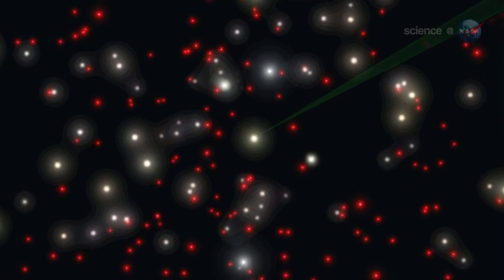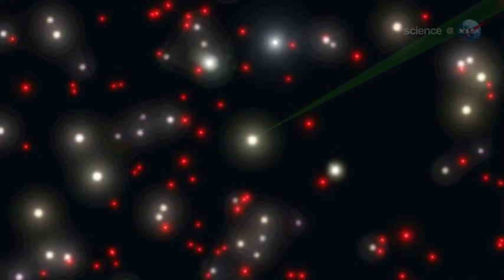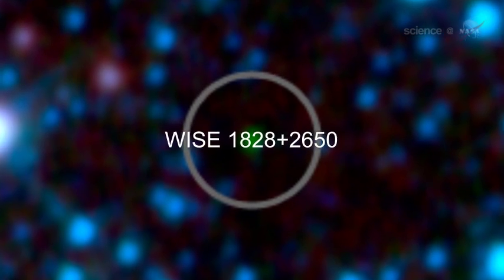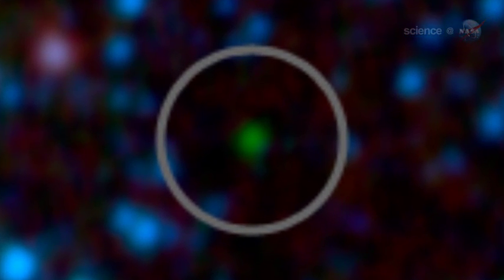WISE recently found six incredibly cool stars less than 40 light-years from Earth. One of these Y-dwarfs, WISE 1828 plus 2650, is the record holder for stellar cool with an estimated atmospheric temperature less than 80 degrees Fahrenheit, or 25 degrees Celsius. WISE 1828 plus 2650 is a room temperature star. Other Y-dwarfs were about the same temperature as a human body.